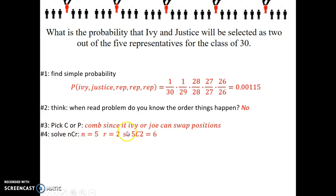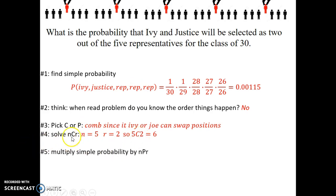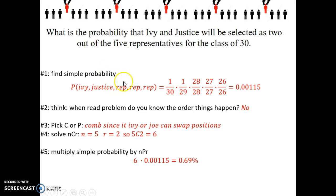Since I don't know the order, I'll consider combination or permutation. I'll use a combination, since it doesn't matter - if I go Ivy, Justice, rep, rep, rep it's exactly the same as Justice, Ivy, rep, rep, rep. So N is five representatives and R is two for Ivy and Justice, giving me 5C2, which equals six. I multiply the simple probability by the combination and end up with 0.69%. The probability of picking those two as reps along with three other classmates is just 0.69%. I hope this is helpful - if you can find the simple probability, that's great; if you can take it to the next level, awesome.